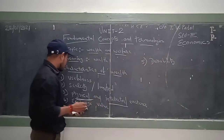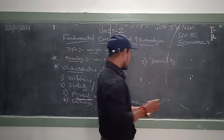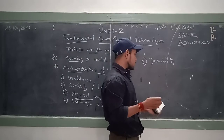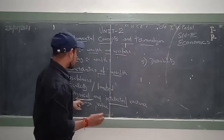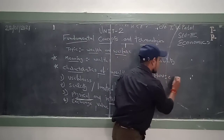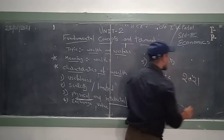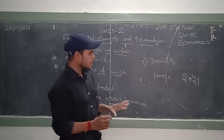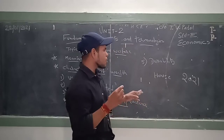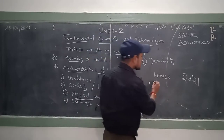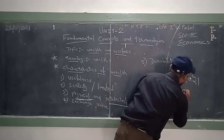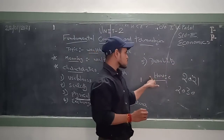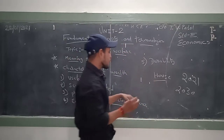The fourth characteristic is exchange value. Any goods or property having exchange value is considered useful. For example, a house purchased in 2021 for personal use — after 10 to 15 years you may want to sell it to purchase another house or move abroad. Even after using it, the house still has exchange value.